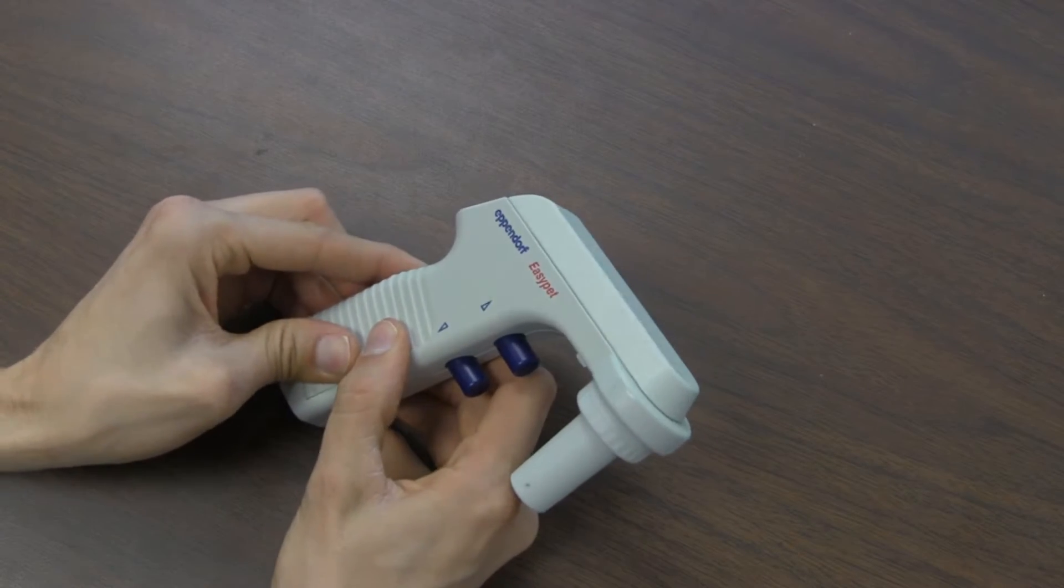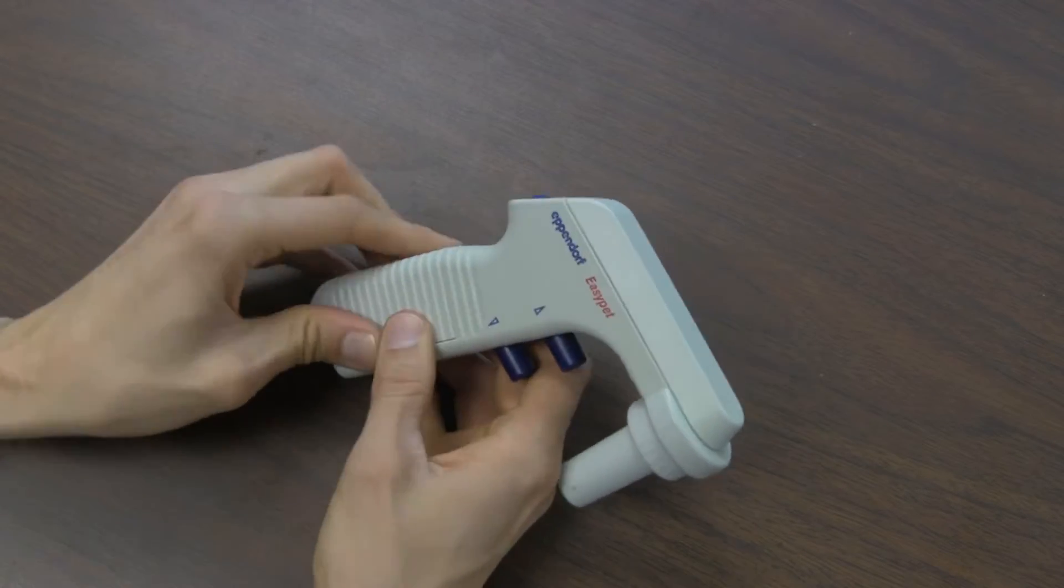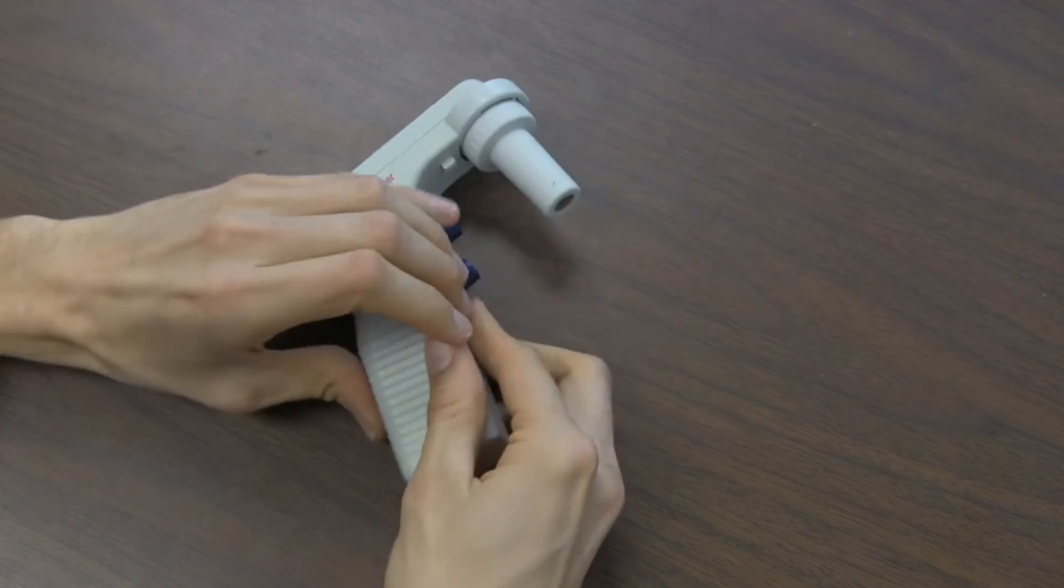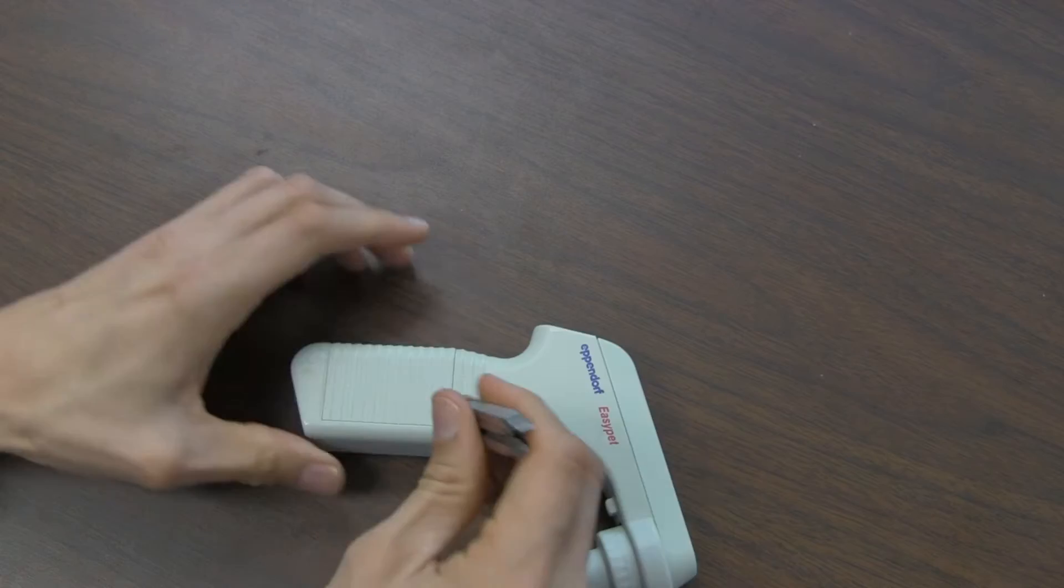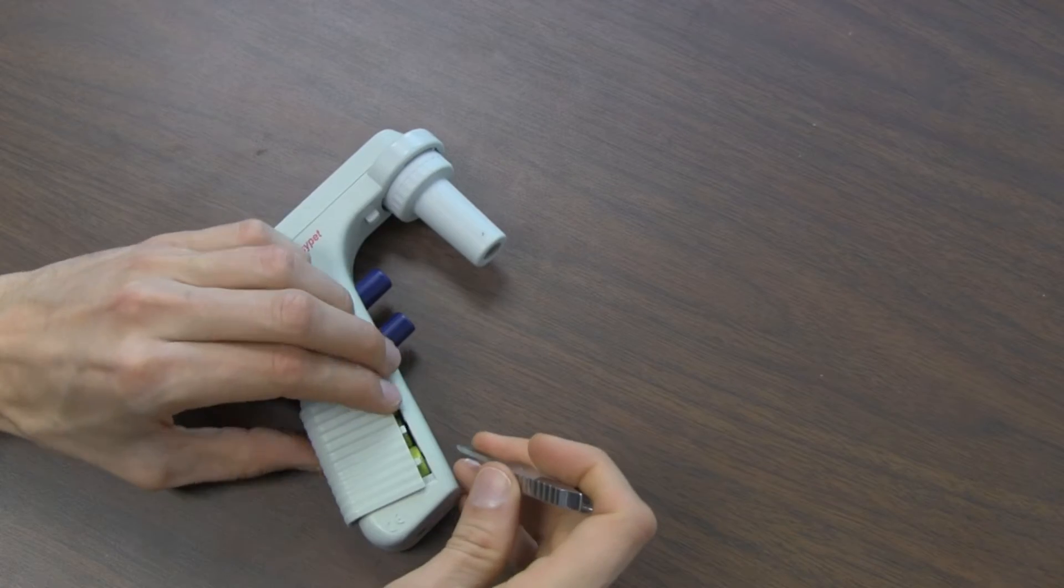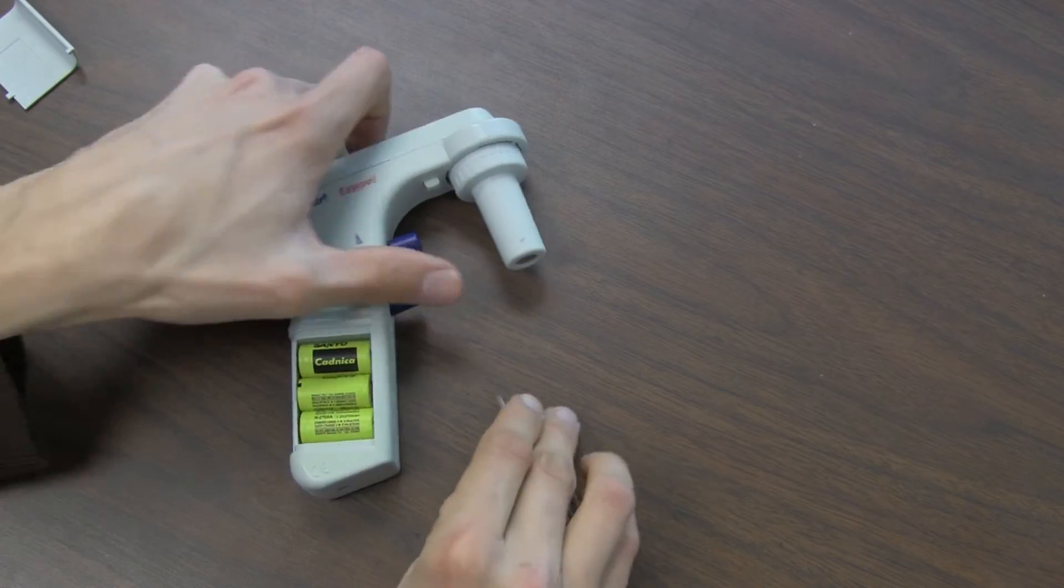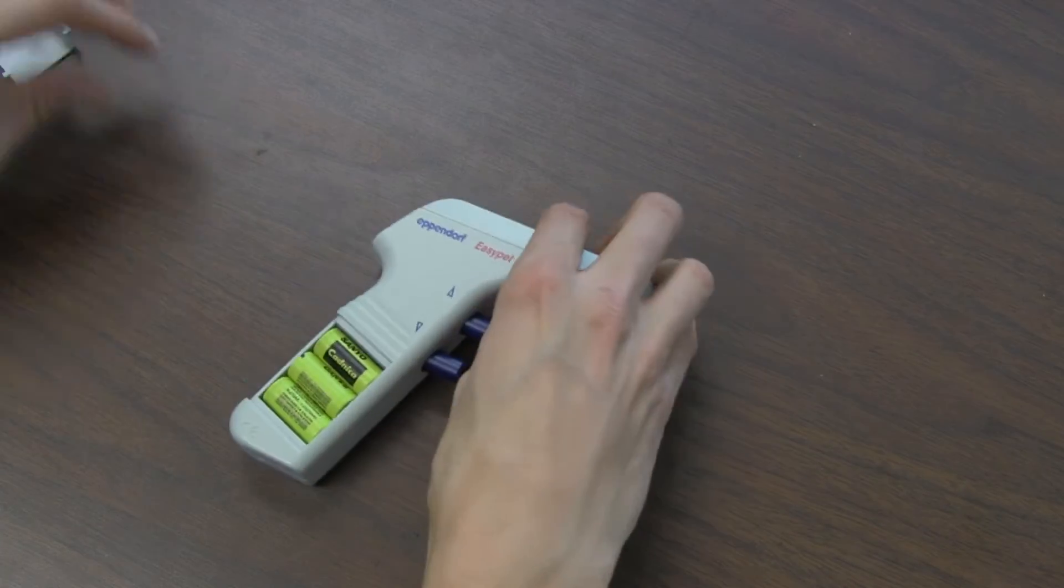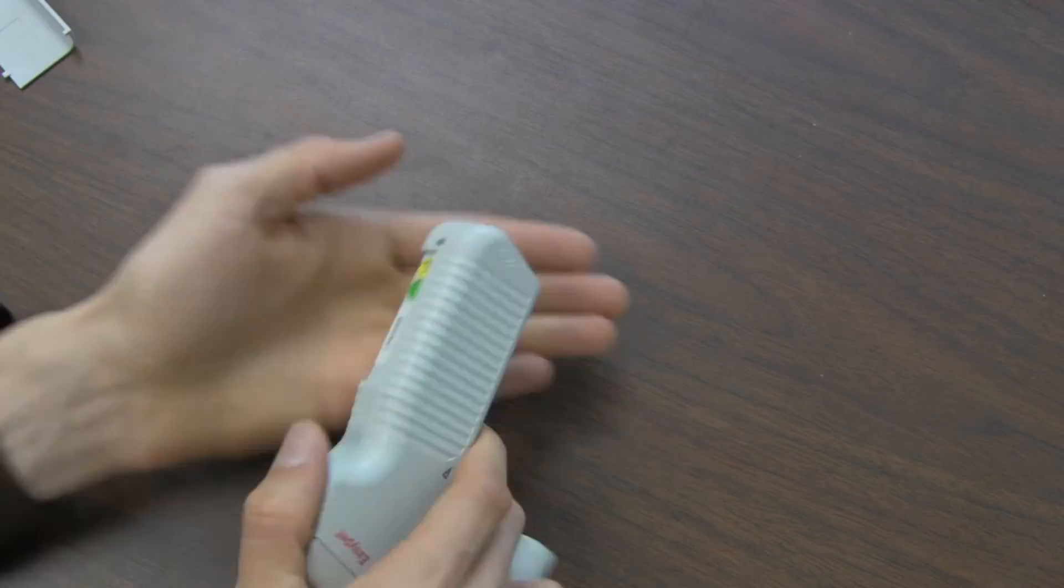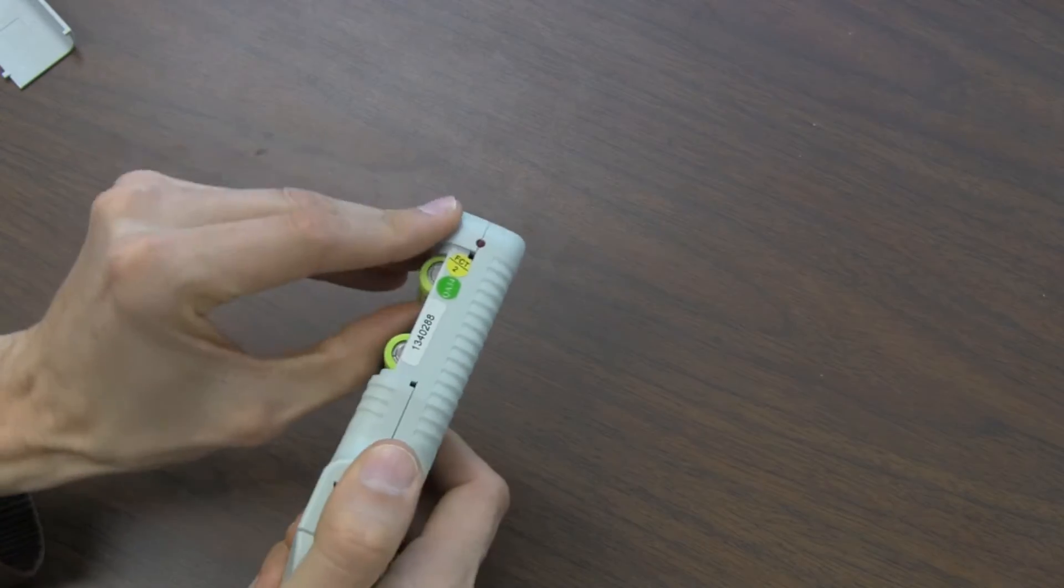First step to fixing a broken Eppendorf EZ-PET is to remove the battery compartment, which is not always as easy as it appears. You can use a screwdriver to help pry open the battery compartment because it's pretty hard to take off with your hands. Then these rechargeable batteries in here, the easiest way to get them out is to tap in your hand, get them out one at a time.